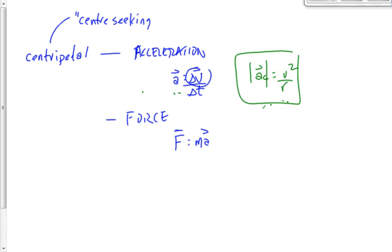A student asked: what if you're decelerating? These equations are valid only for constant speed — uniform circular motion. If the speed is changing, the equation a equals v squared over r doesn't apply, because it assumes the same speed all the way around. You can analyze non-uniform circular motion, but it's more complicated. For most real-world situations, uniform circular motion is a good approximation.